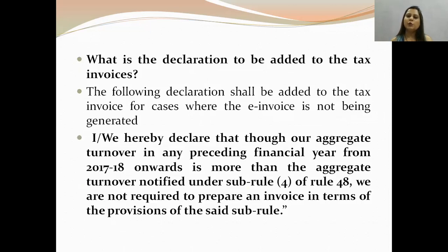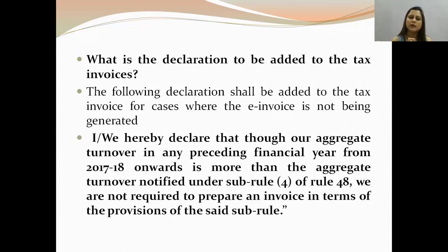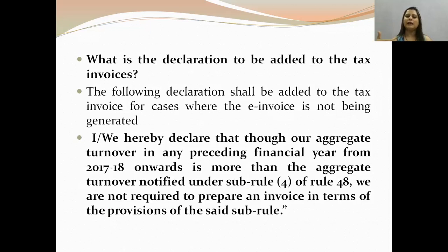What is the declaration to be added to the tax invoice? Under Rule 46S, there is a declaration. Under the invoice, you have to declare: 'I/We hereby declare that though our aggregate turnover in any preceding financial year from 2017-18 onwards is more than the aggregate turnover notified under sub-rule (4) of Rule 48, we are not required to prepare an invoice in terms of the provisions of the said sub-rule.' That means, you have to declare that your turnover exceeds the limit but you belong to the exempt category.